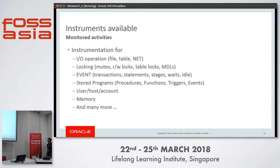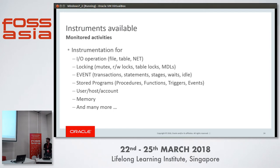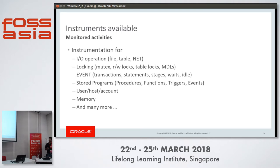Performance Schema has instrumentation for IO operations on files, tables, and sockets; locking information including mutexes, read/write locks, table locks, and metadata locks; events including transactions, statements, stages, waits, and idle events; stored programs — stored procedures, prepared statements, functions, triggers, and events; and categorization based on user, host, and account. Memory usage instrumentation is also available, along with many more.